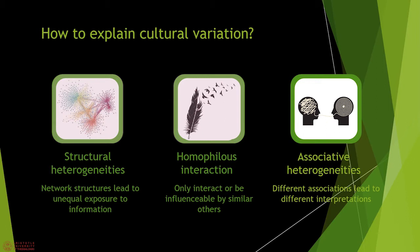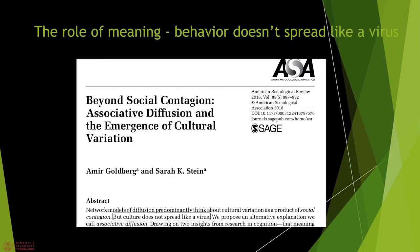On the other hand, we have models based on homophily. Here, the causality is the other way around. People tend to interact with others that are similar and are influenced only by those they identify with. We looked at a third mechanism driving differences that Goldberg and Stein introduced, namely one based on associations and interpretation. This model implements a type of diffusion mechanism for the associations between behaviors.